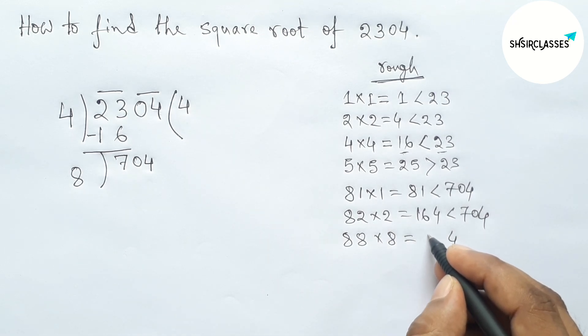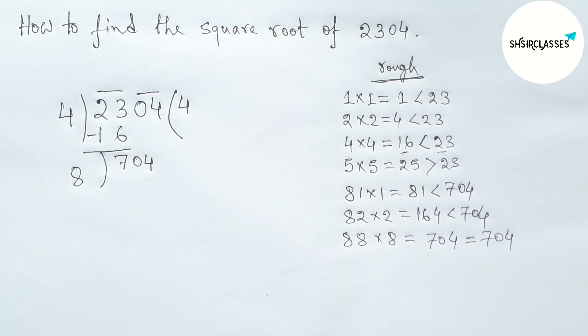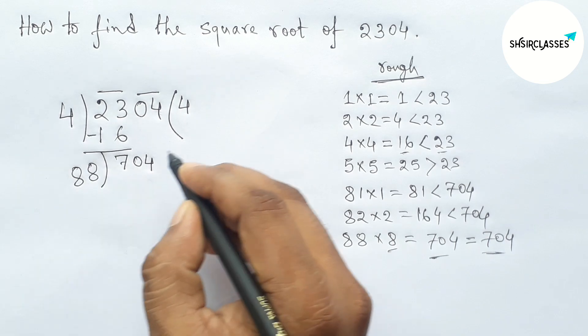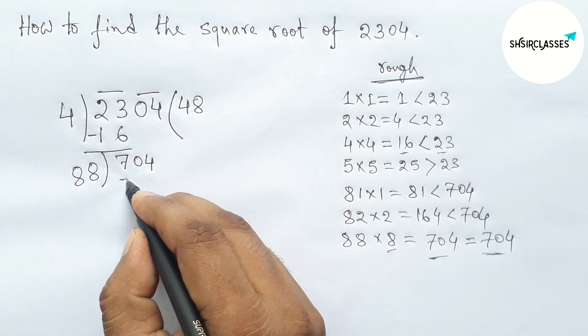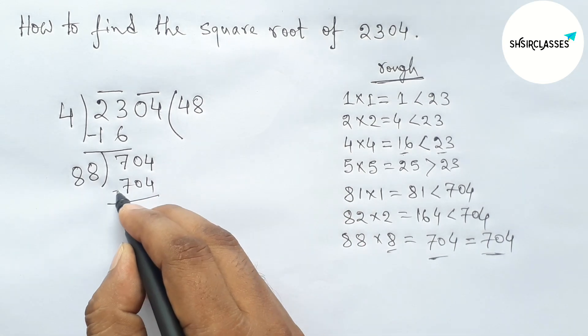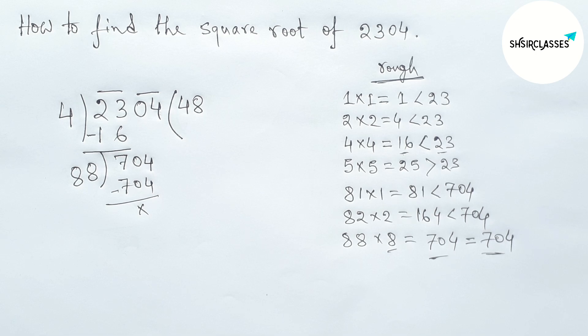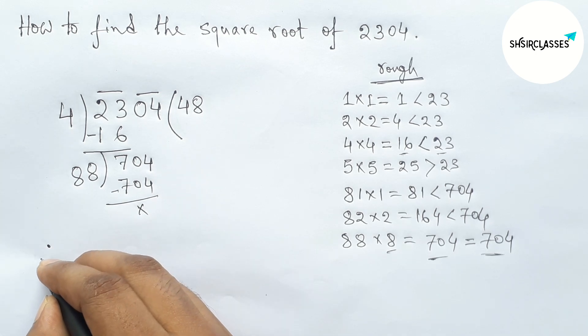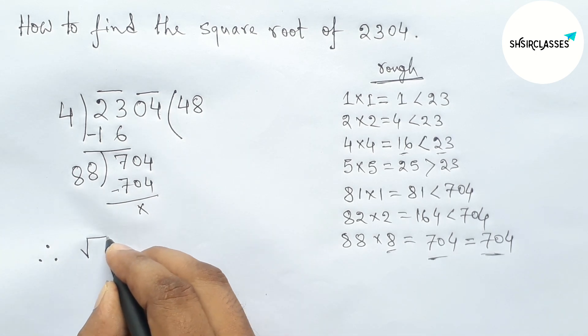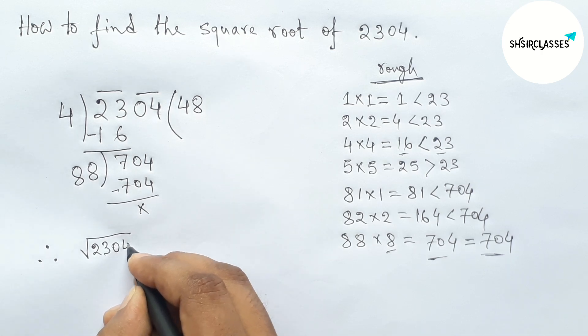So 8 times 8 is 64, so 88 times 8 equals 704. So here we're taking 8 and putting here also 8. So the end. Therefore, the square root of 2304 equals 48.